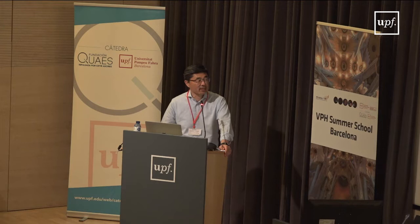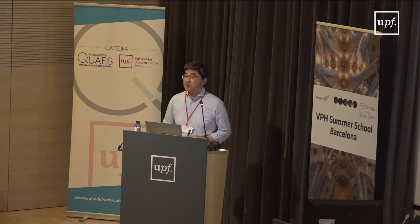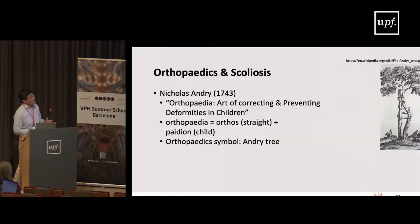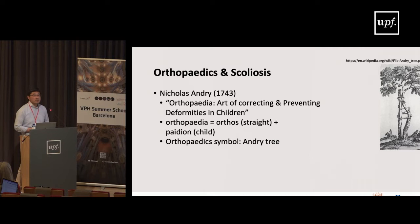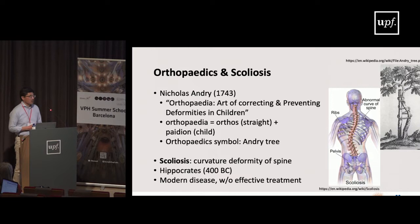Let me start a little more general. Orthopedics is actually a relatively new term — it was coined only in the 18th century by a man named Nicolas Andry. He came up with the word 'orthopedia' as the art of correcting and preventing deformities in children. Orthopedia comes from 'orthos' meaning to straighten, and 'pedion' meaning child. The symbol of orthopedics is the Andry tree — the idea being that by attaching a crooked tree to something straight, you can straighten the trunk. This is what a scoliotic spine looks like: a curvature deformity very similar to that tree trunk.